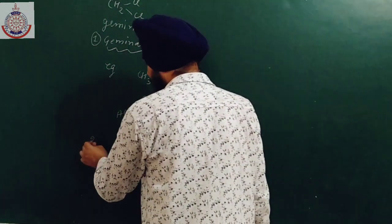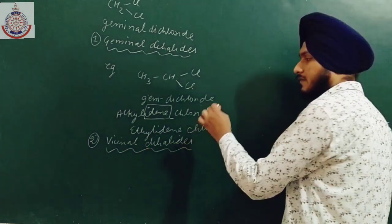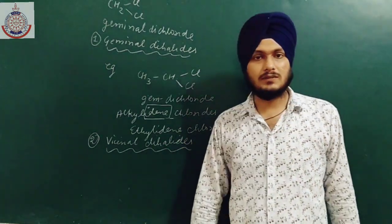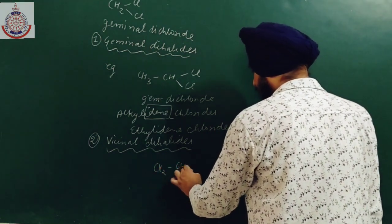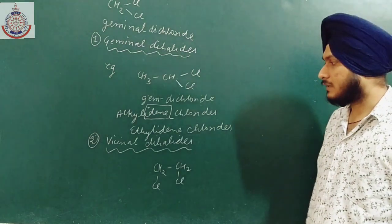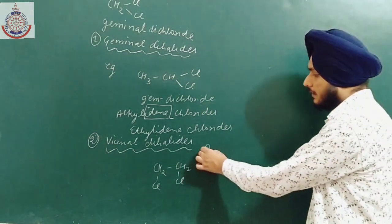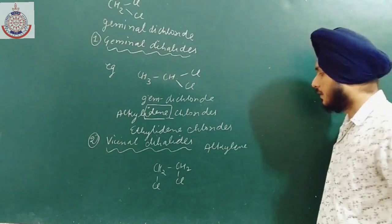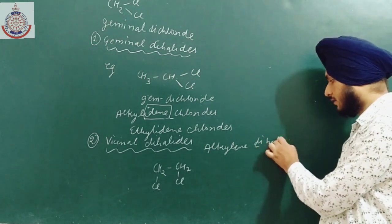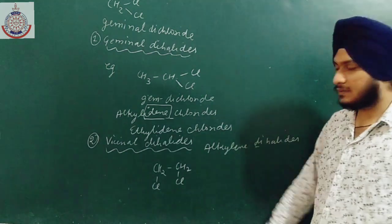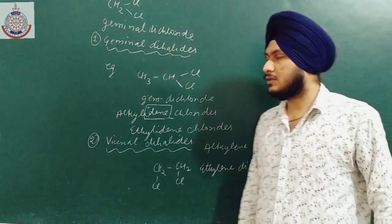We also have vicinal dihalides. Vicinal dihalides are those in which the two halogen atoms are attached to adjacent carbon atoms. The common name uses the 'alkylene dihalide' format — for example, the compound is named ethylene dichloride.